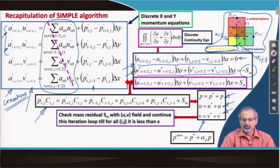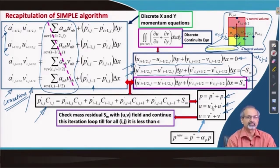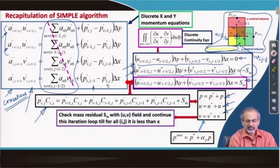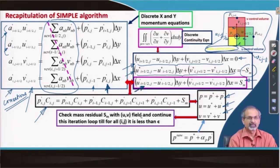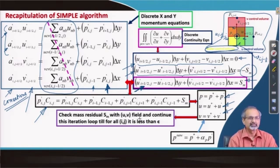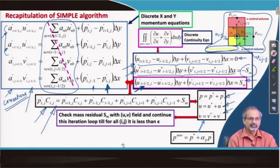Once we subtract the estimated equation from the correct field equation, we come up with an equation in terms of corrections. We are essentially substituting the equations from the left block into the continuity equation. You will find no velocities left because the right-hand side of the velocity equations contains only pressures, and therefore you come up with the pressure correction equation.